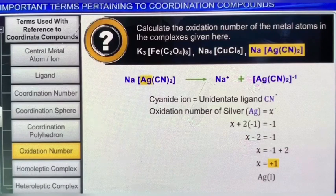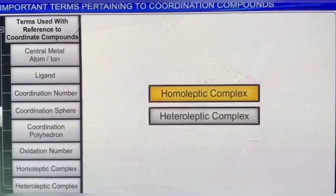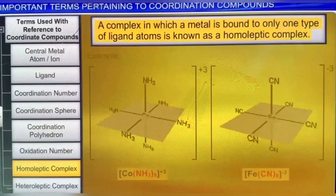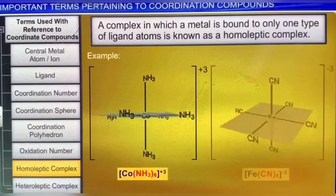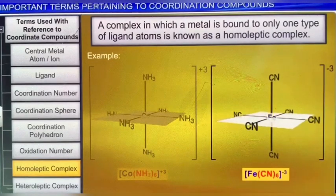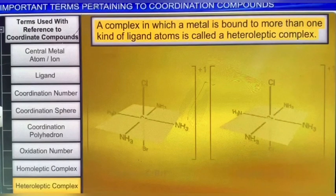Finally, let's look at the terms homoleptic complex and heteroleptic complex. A complex in which a metal is bound to only one type of ligand atoms is known as a homoleptic complex. For example, [Co(NH₃)₆]³⁺ and [Fe(CN)₆]³⁻. On the other hand, a complex in which a metal is bound to more than one kind of ligand atoms is called a heteroleptic complex. For example, [Co(NH₃)₄ClBr]⁺ and [Cr(NH₃)₄Cl₂]⁺.